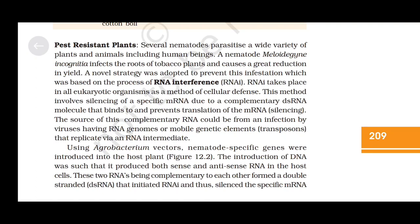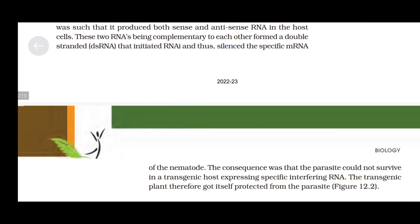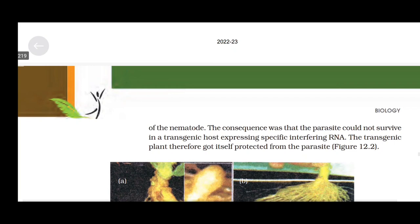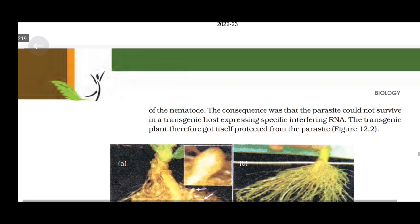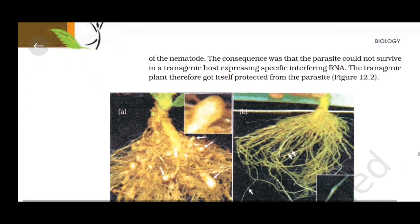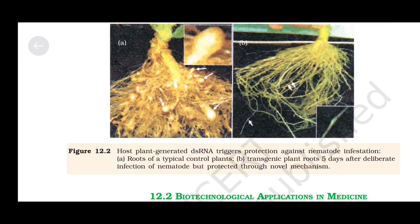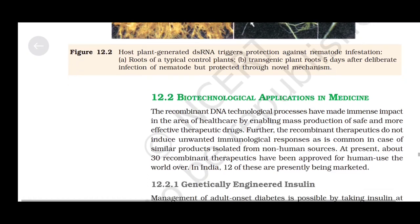These two RNAs, being complementary to each other, formed a double-stranded RNA that initiated RNAi, thus silencing the specific mRNA of the nematode. The consequence was that the parasite could not survive in a transgenic host expressing specific interfering RNA. The transgenic plant therefore protected itself from the parasite, as shown in figure 12.2.